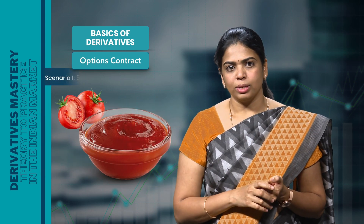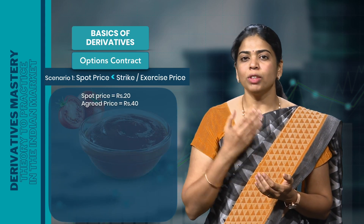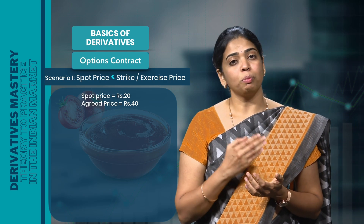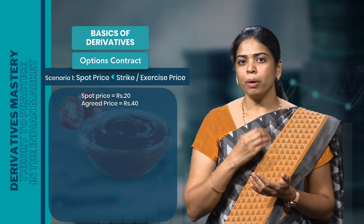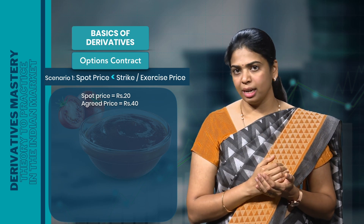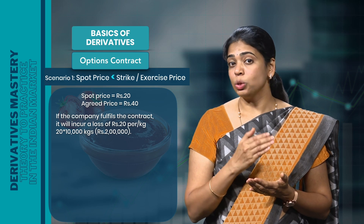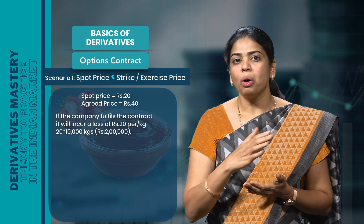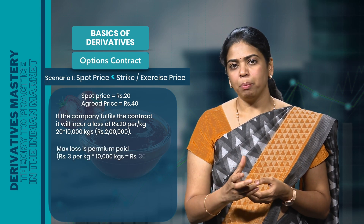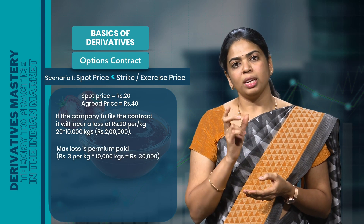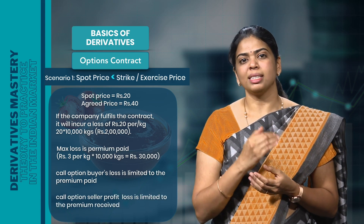In scenario 1, the spot price is less than the strike price. If the spot price on expiry is Rs 20 per kg and the agreed price is Rs 40 per kg, the situation does not favour the buyer. If the company fulfils the contract, it will incur a loss of Rs 20 per kg × 10,000 kgs = Rs 2,00,000. Since the company has bought a call option and the situation is not favourable, it is not obliged to fulfil the contract. The maximum loss is the premium paid: Rs 3 per kg × 10,000 kgs = Rs 30,000. So the call option buyer's loss is limited to the premium paid, and the profit for the seller is limited to the premium received.